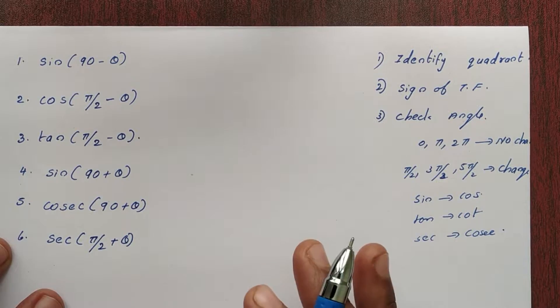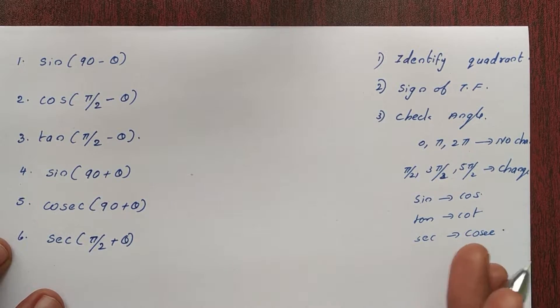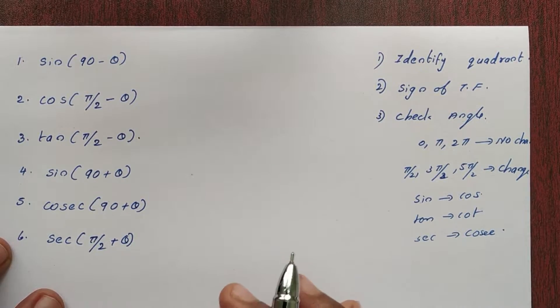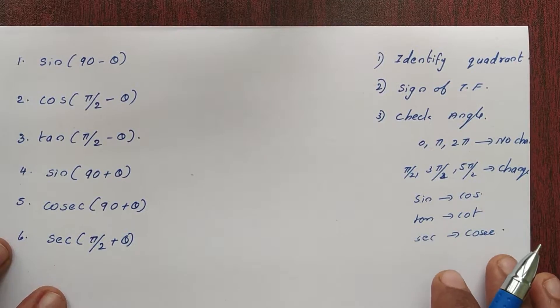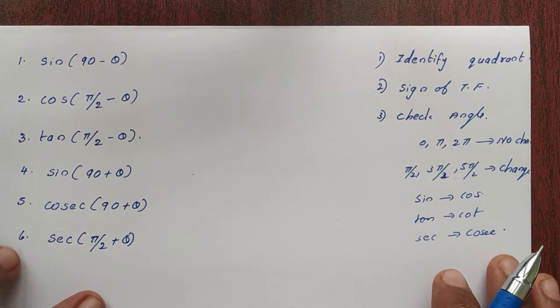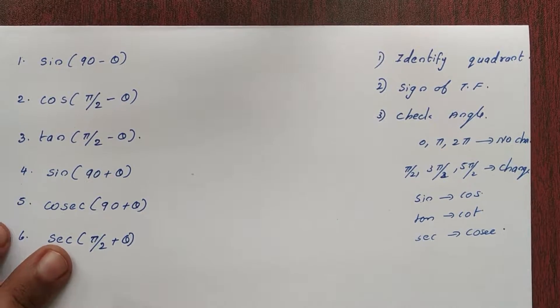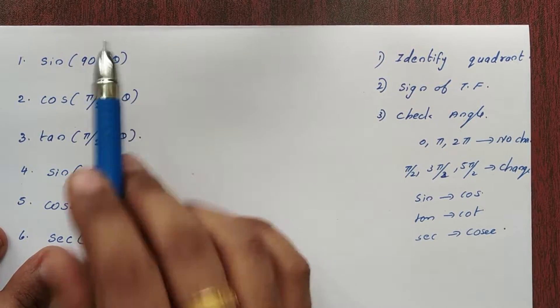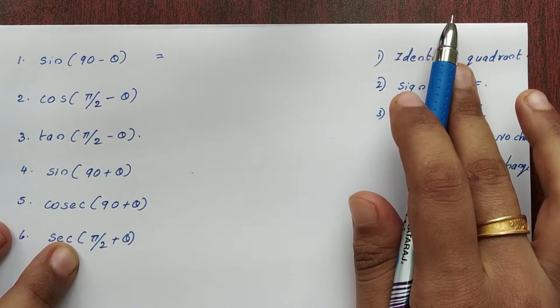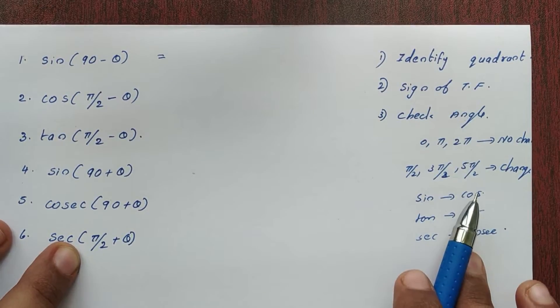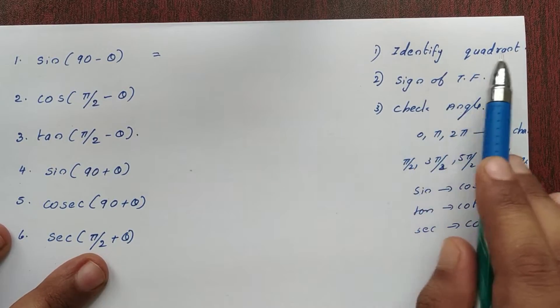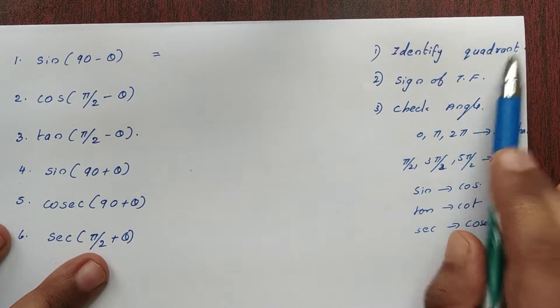Hi students. In the previous video, you will be able to solve problems. The first question is sin(90 minus theta). The first step is to identify the quadrant.